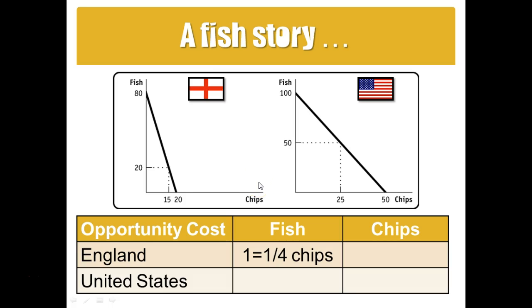Once we have that opportunity cost for England, figuring out the opportunity cost of chips for England is easy — we just take the reciprocal. In the case of England, how many fish per chip are they giving up? If they're going to produce chips, they're giving up 80 fish per 20 chips. So the opportunity cost for England is 4 fish per chip.